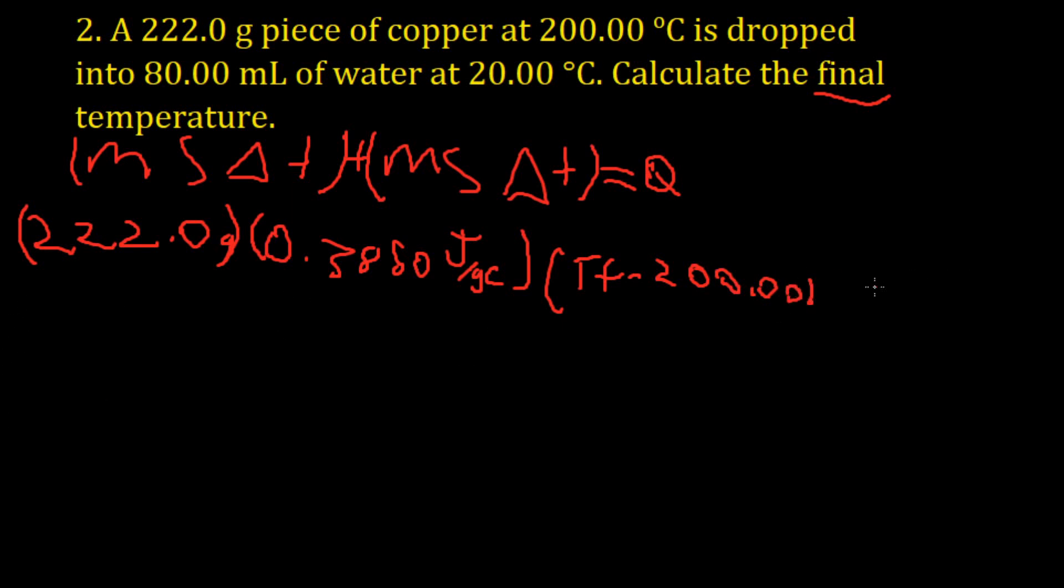Now let's do the water. It was 80 milliliters of water. And remember the density, so it's 80.00 grams times the specific heat of water, 4.184 joules over grams Celsius. And then the final temperature, which was not given to us, minus the initial temperature for delta t, which was 20.00 degrees Celsius.